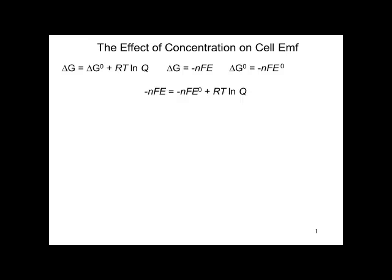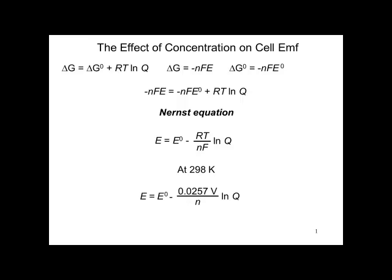We can make the substitutions and solve for E. It's called the Nernst equation: E equals E zero minus RT over NF log of Q. At 298 Kelvin, this reduces down to E equals E zero minus 0.0257 volts divided by N times the log of Q.